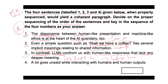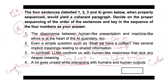Sentence four states: 'A lot goes on when interacting with humans and the human outputs.' This introduces the concept that a lot goes on in human interaction, setting up the discussion about implicit meanings in communication. So sentence four provides the background context for the paragraph.